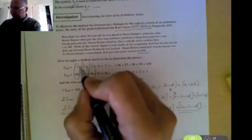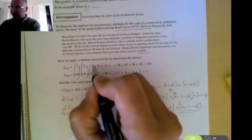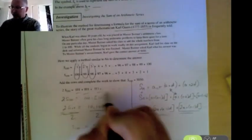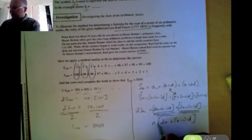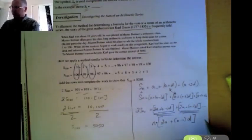Just like over here when we added 100 plus 1, 2 plus 99, 3 plus 98, we got 101 each time. So how many groupings of this 2A plus N minus 1D are we going to have? Well the number of terms in that series. So we're going to have to multiply by the number of terms in this series.